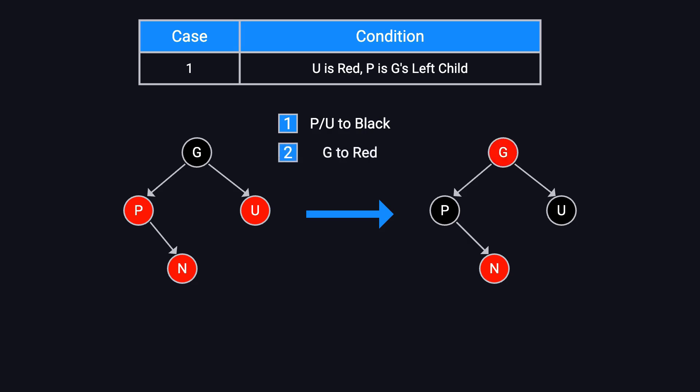Step two. Recolor G to red. Step three. Move the current pointer to G for further checking to see if any violations remain upward. Note that in this case, it doesn't matter whether N is P's right or left child. As long as U is red, the process remains the same.